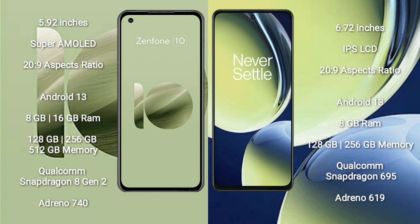Asus Zenfone 10 runs on the Android 13 operating system. OnePlus Nord CE 3 Lite also runs on Android 13. Asus Zenfone 10 comes with 8GB or 16GB RAM and 128GB, 256GB, or 512GB internal storage.